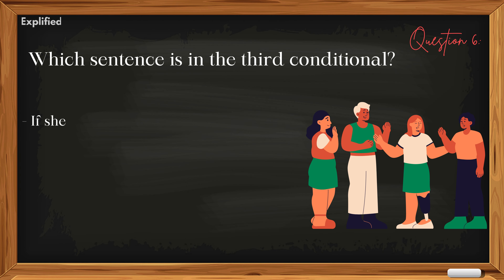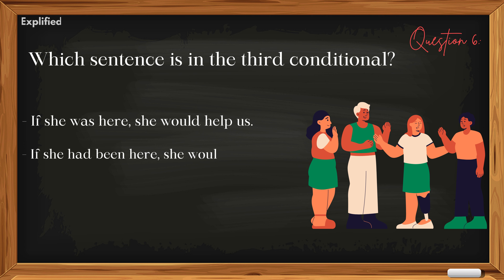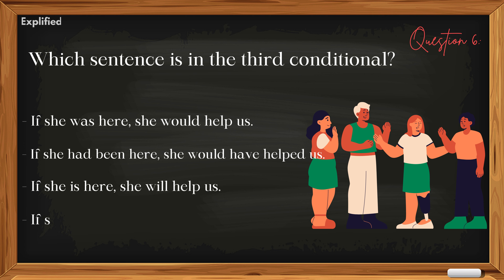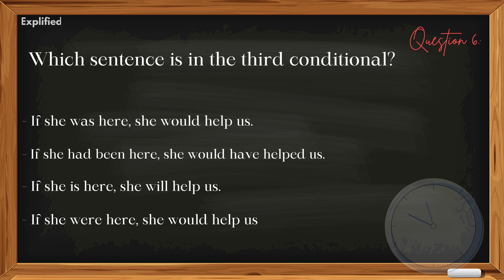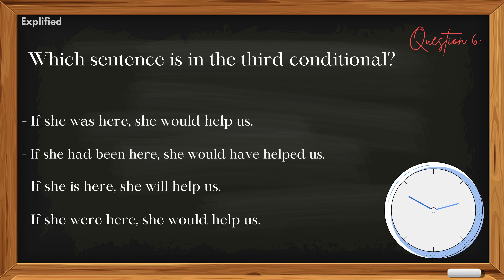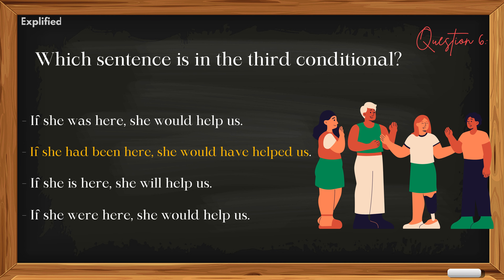Question 6: Which sentence is in the third conditional? 'If she was here, she would help us.' 'If she had been here, she would have helped us.' 'If she is here, she will help us.' 'If she were here, she would help us.' Answer: 'If she had been here, she would have helped us.'